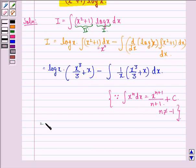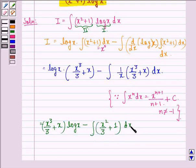Now this can be further written as x cube by 3 plus x into log x minus integral of x square by 3 plus 1 into dx because 1 by x into x cube by 3 gives us x square by 3 and 1 by x into x gives us 1.